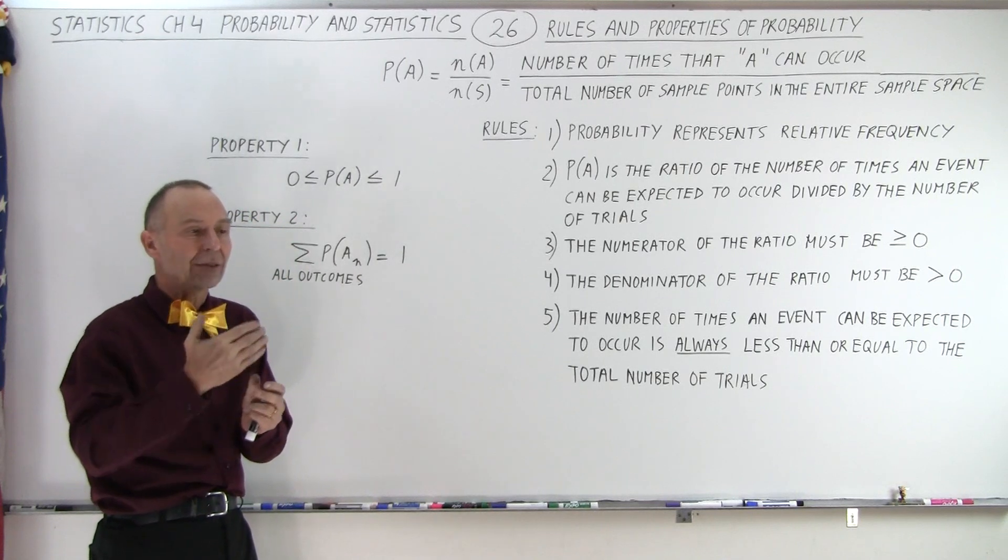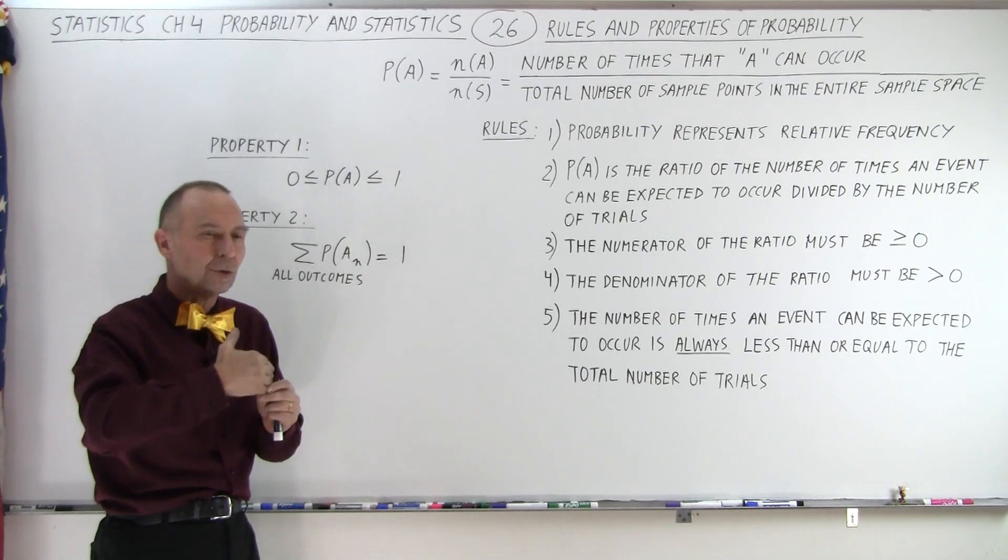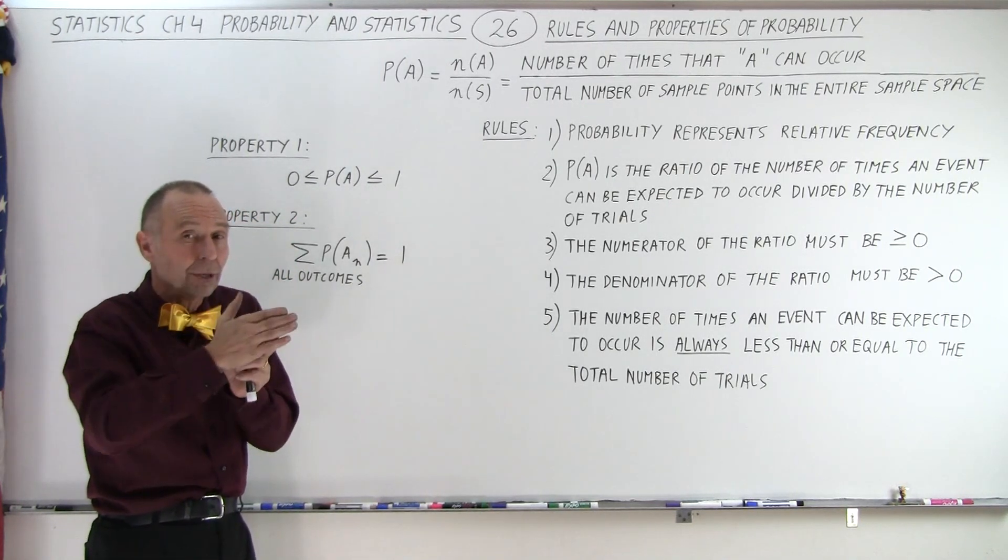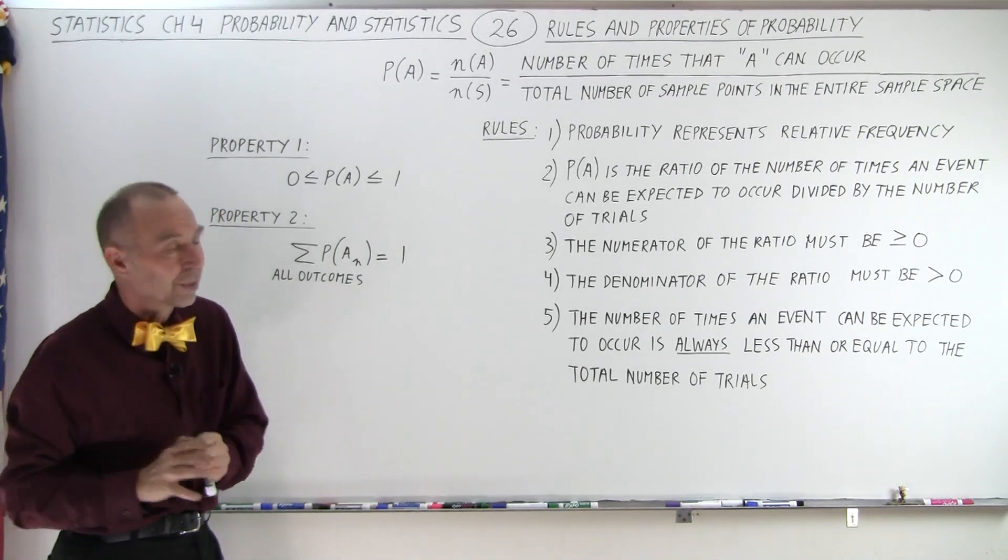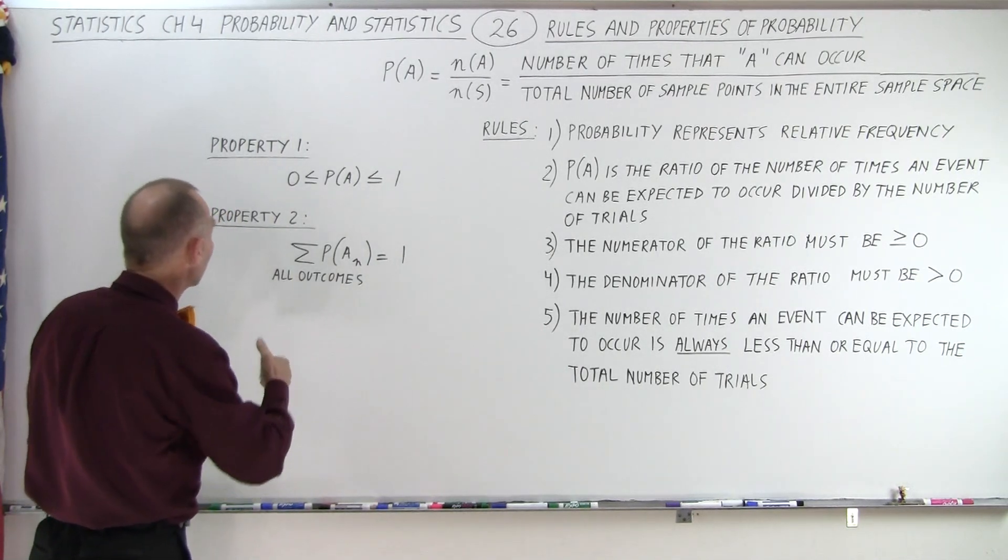Sometimes what you'll find is that when you sum up all the possibilities, all the probabilities of every event, you don't come up with the total number of trials, and then you know something is wrong. So that's how we come to the properties.